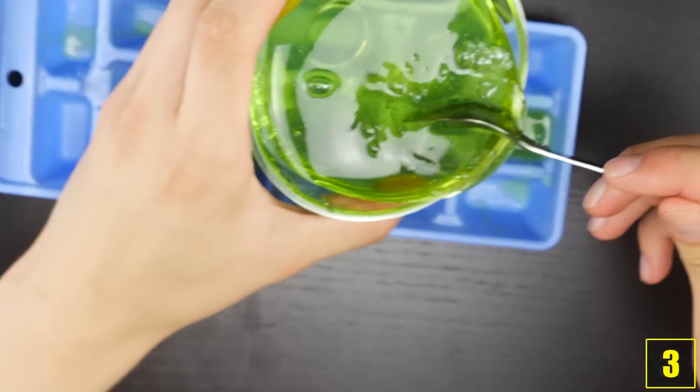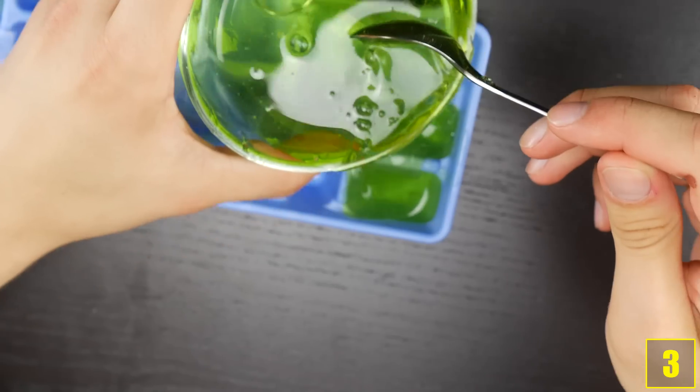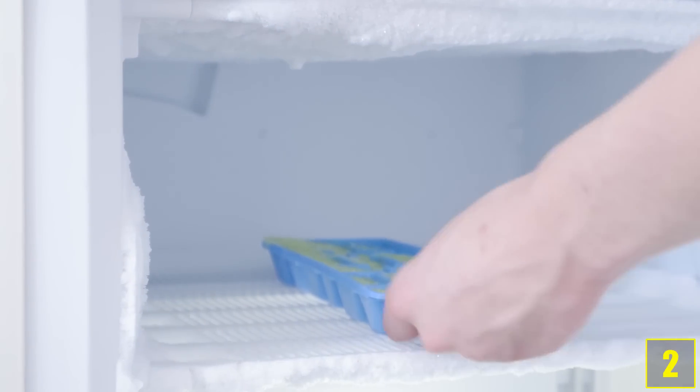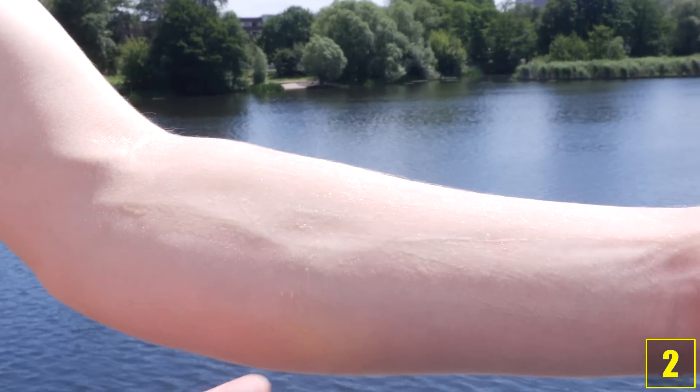And here we are at number 2. You got sunburned! Fill an ice cube tray with aloe vera gel and put it in the freezer. This way you can treat your sunburn and cool it at the same time. Clever stuff.